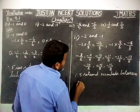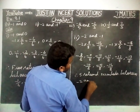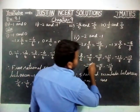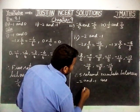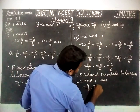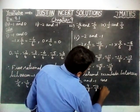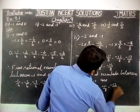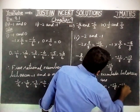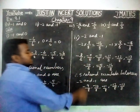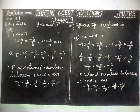So, in between minus 8 by 8 and minus 16 by 8, the numbers are: minus 9 by 8, minus 10 by 8, minus 11 by 8, minus 12 by 8, minus 13 by 8, minus 14 by 8, minus 15 by 8. We have to write only 5 rational numbers. So the 5 rational numbers between minus 2 and minus 1 are: minus 9 by 8, minus 10 by 8, minus 11 by 8, minus 12 by 8, and minus 13 by 8.